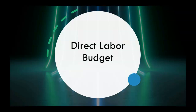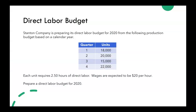Let's work through a direct labor budget example problem. Stanton Company is preparing a direct labor budget for 2020 from the following production budget based on a calendar year. We're given information in a table for how many units they will be producing in each quarter in 2020.